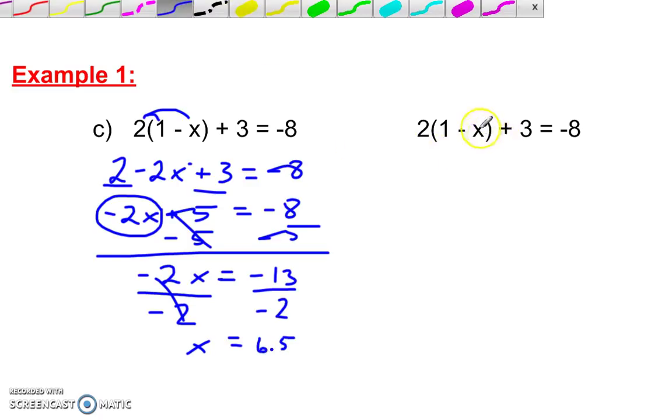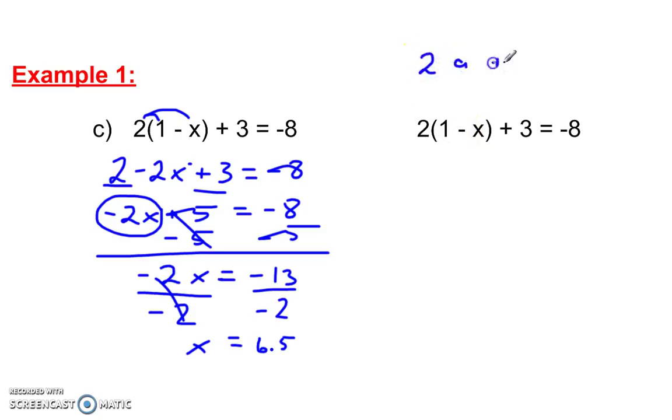Now, you could look at this grouping symbol as one quantity. Like, for example, if this said 2a plus 3 equals negative 8. We could say this set of parentheses is like that a there. We can treat it the same way.